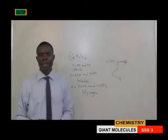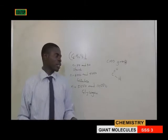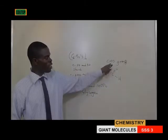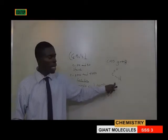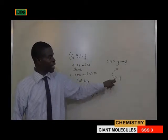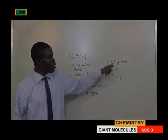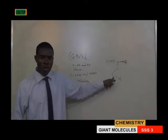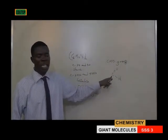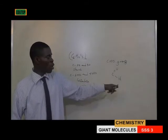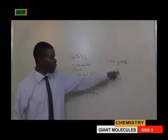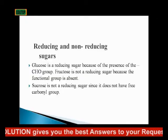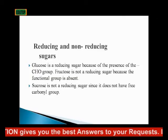Fructose is not a reducing sugar because the carbonyl functional group is absent. So if you are asked to differentiate between glucose and fructose: glucose is a reducing sugar because of the presence of the carbonyl group, while fructose is not a reducing sugar because of the absence of the carbonyl group.